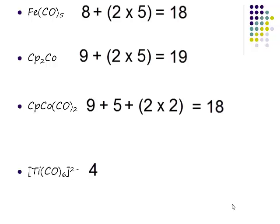CO. How many electrons does CO donate? Two. And what else do I need to include? The charge. So if it's two minus, what do I need to do to my count? You need to add two to the count. And if we add that lot together, what do we get? 18.